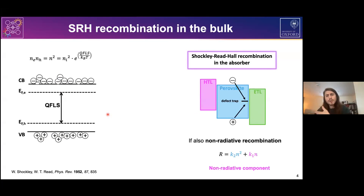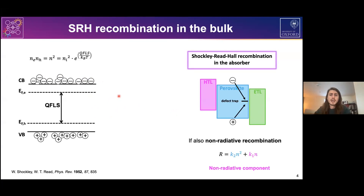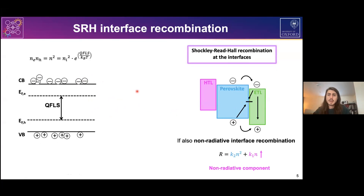In a more realistic scenario, our semiconductor will have defects and traps which act as non-radiative recombination centers. These provide an additional non-radiative recombination path, decreasing the density of electron-hole pairs and reducing the quasi-Fermi level splitting, hence a lower VOC. On top of that, we also have recombination across interfaces between the perovskite and transport layers — for example, recombination between an electron in the ETL and a hole in the perovskite absorber. This interface recombination further decreases VOC.